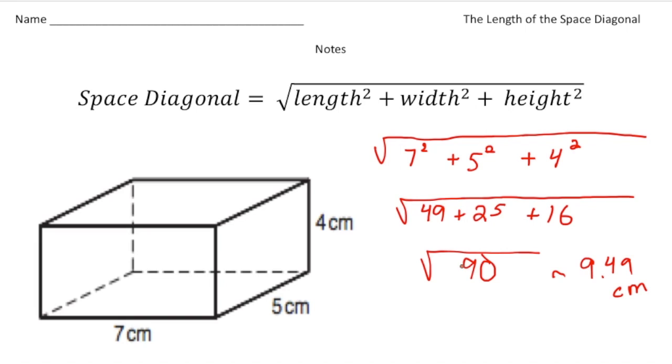So now that you understand a little more about the space diagonal, why don't you pause the video and try the your turn problem now. And when you're done, hit play. You can see how you did. Good luck.